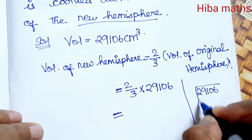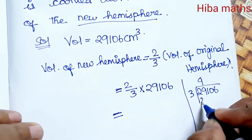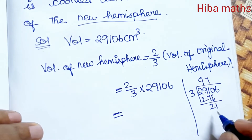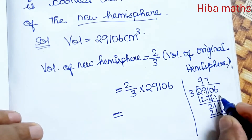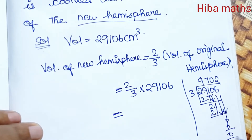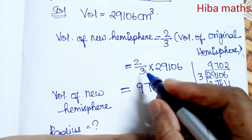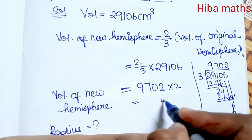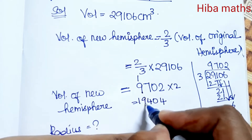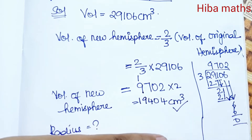Dividing: 3 eights are 24, 3 nines are 27, working through the division steps — the result is 9702. Then 2 twos are 4, 7 twos are 14 carry 1, 9 twos are 18 plus 1 is 19. So the new volume is 19404 cubic centimeters.